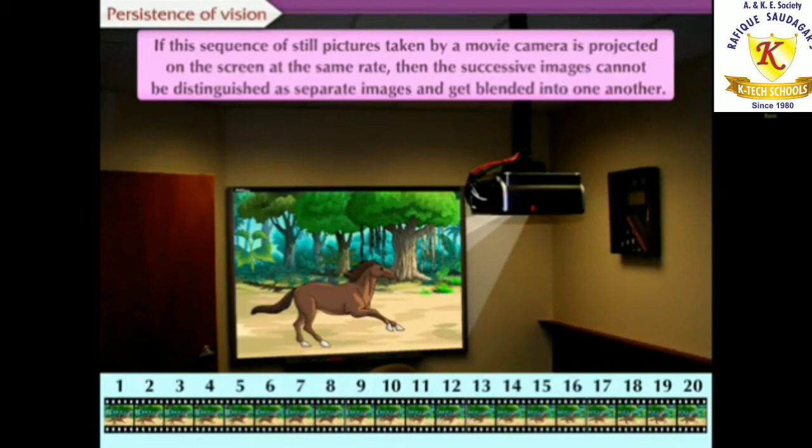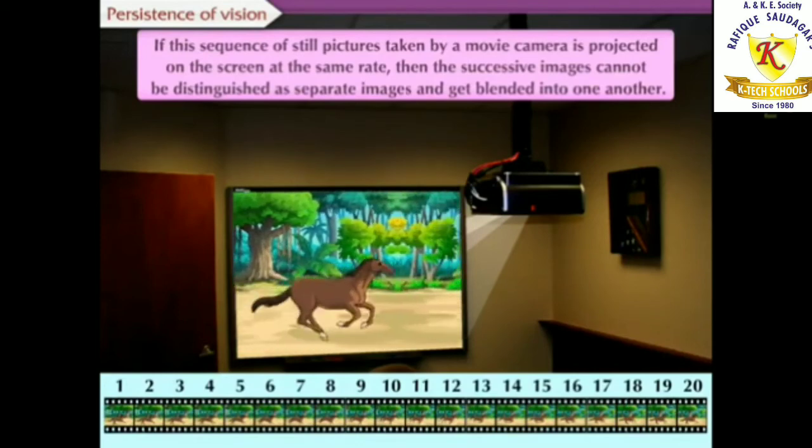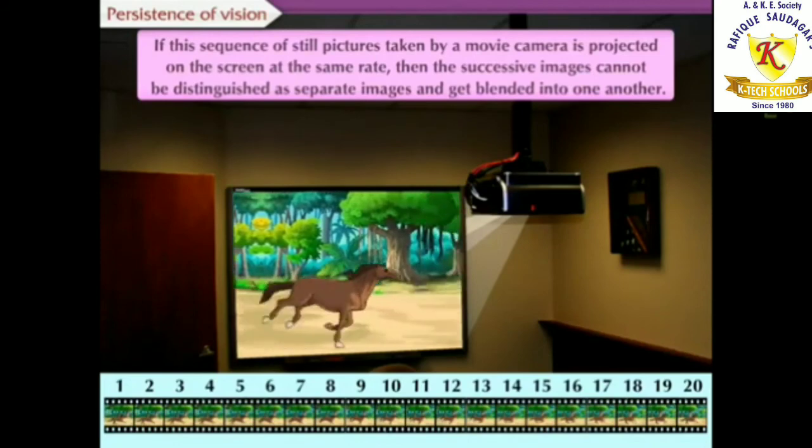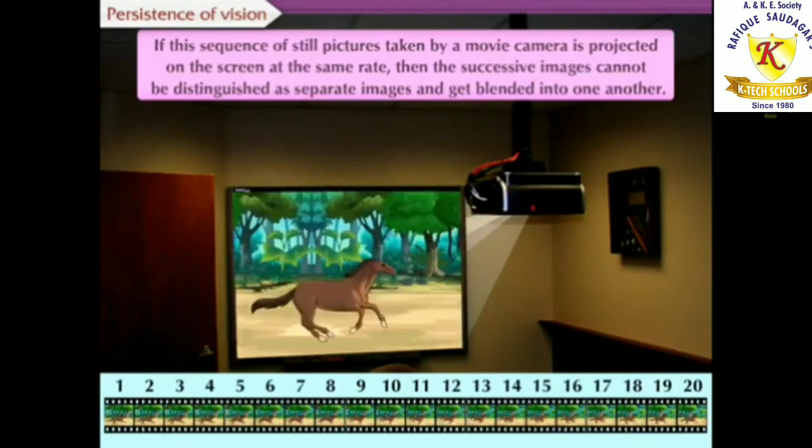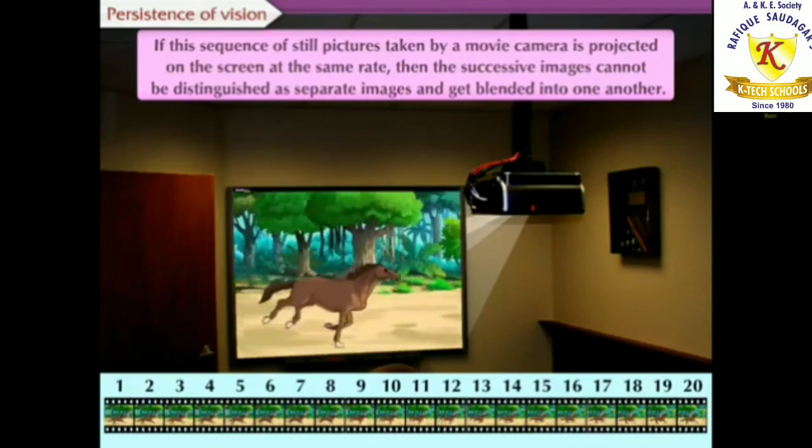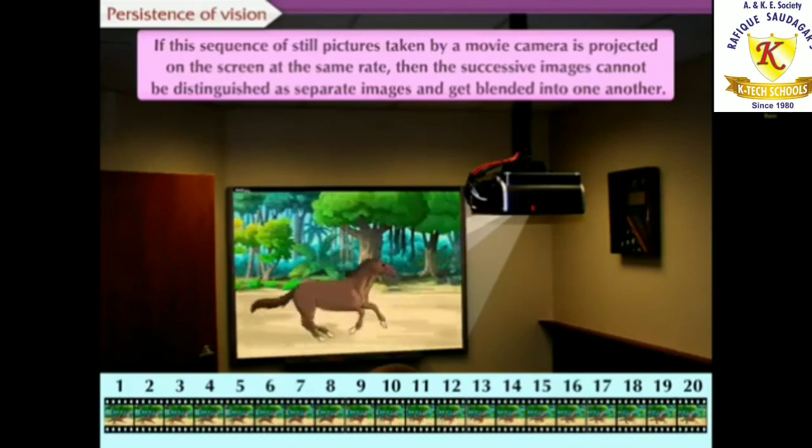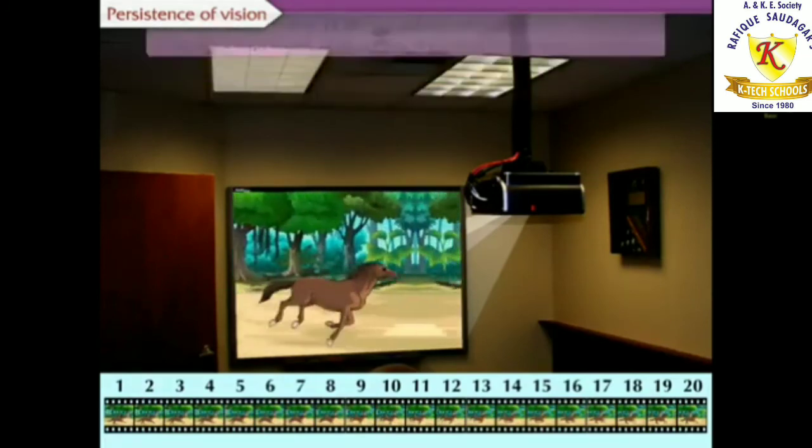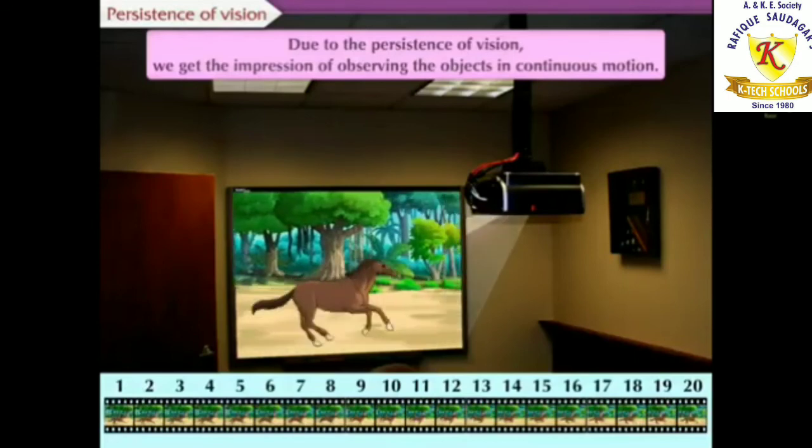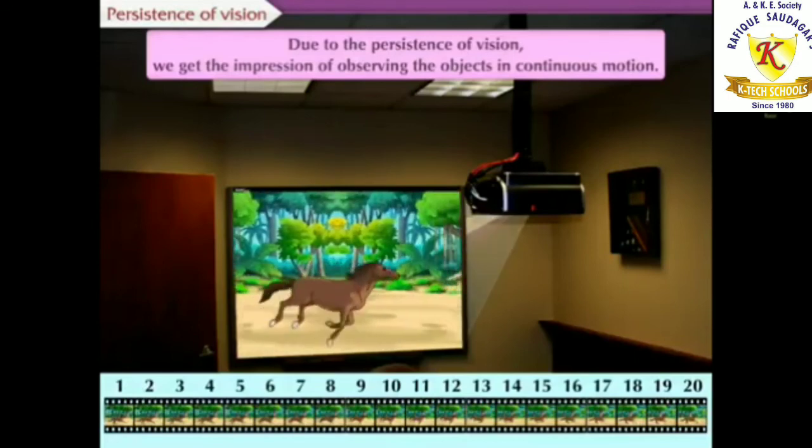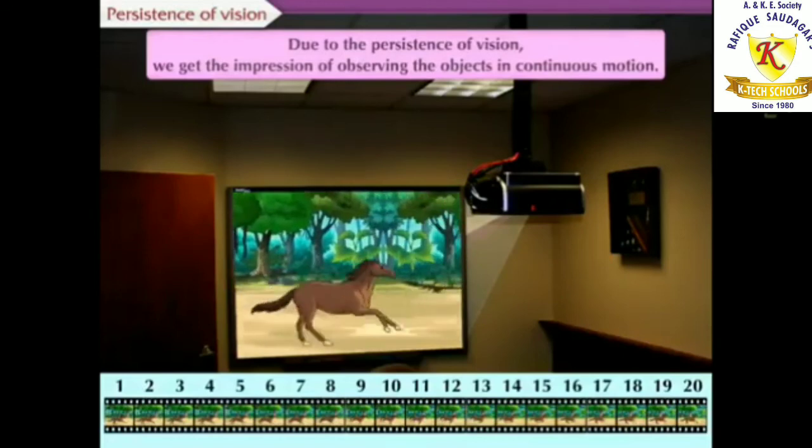If this sequence of still pictures taken by a movie camera is projected on the screen at the same rate, then the successive images cannot be distinguished as separate images and get blended into one another. Due to the persistence of vision, we get the impression of observing the objects in continuous motion.